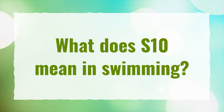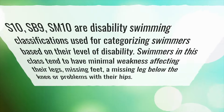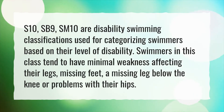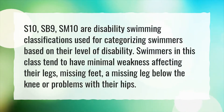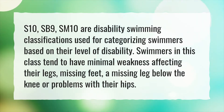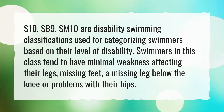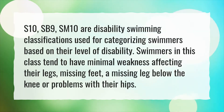What does S10 mean in swimming? S10, SB9, SM10 are disability swimming classifications used for categorizing swimmers based on their level of disability. Swimmers in this class tend to have minimal weakness affecting their legs, missing feet, a missing leg below the knee, or problems with their hips.